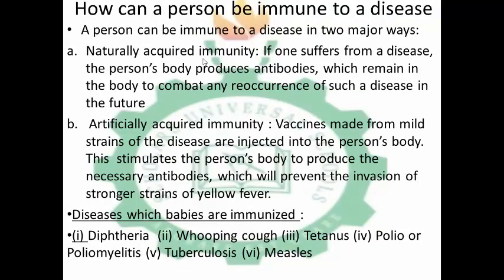A person can be immune to a disease in two major ways: naturally acquired immunity or artificially acquired immunity. If one suffers from a disease, the person's body produces antibodies which remain in the body to combat any reoccurrence of that disease in the future. For artificial acquired immunity, vaccines made from mild strains of the disease are injected into the person's body, stimulating the body to produce necessary antibodies which prevent the invasion of stronger strains of the disease.